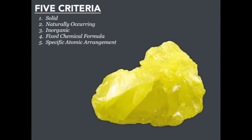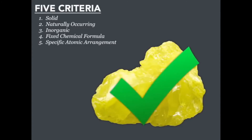What about sulfur? Sulfur exists as a solid, it's naturally occurring — forming along volcanoes — it is inorganic, has a specific chemical formula composed of the element sulfur, and has a specific atomic arrangement. So sulfur meets all five criteria and is considered a mineral.